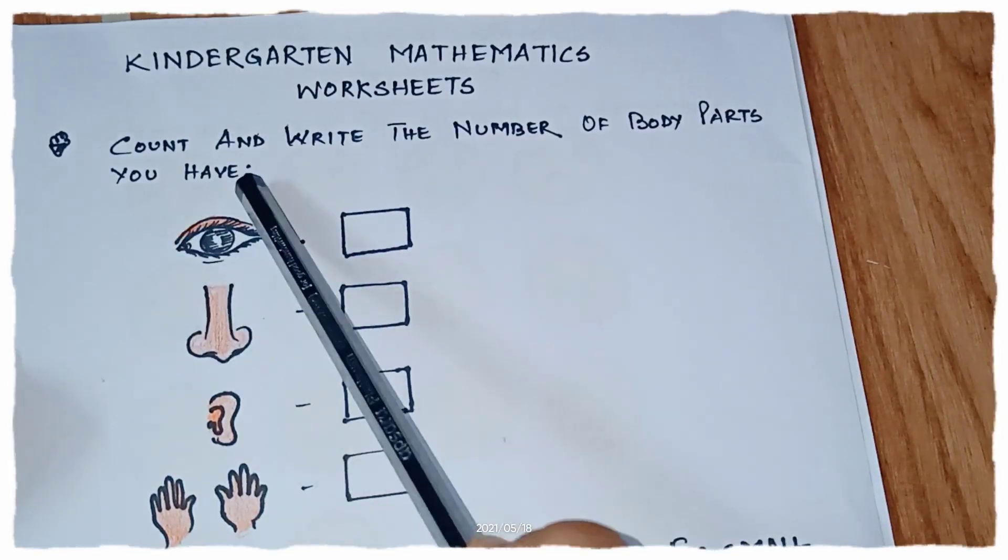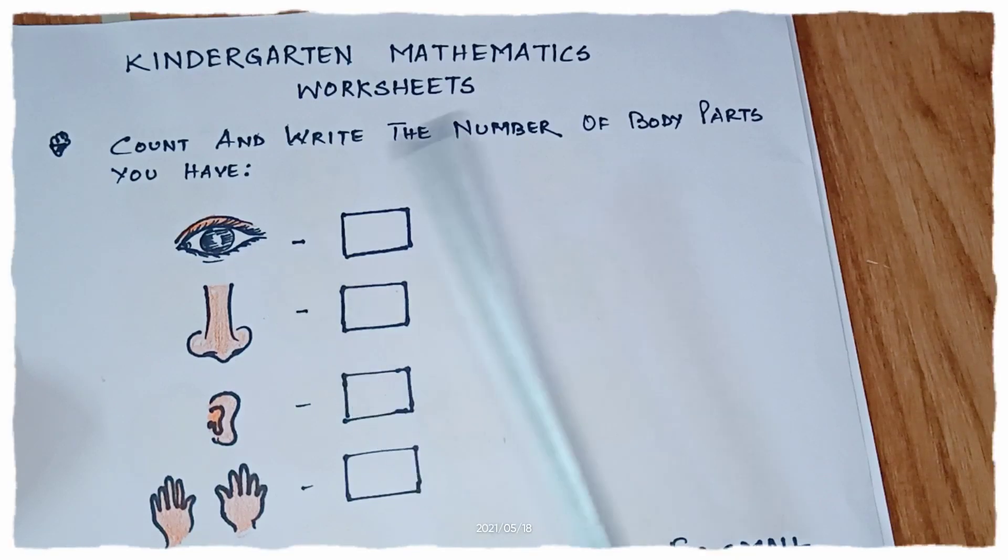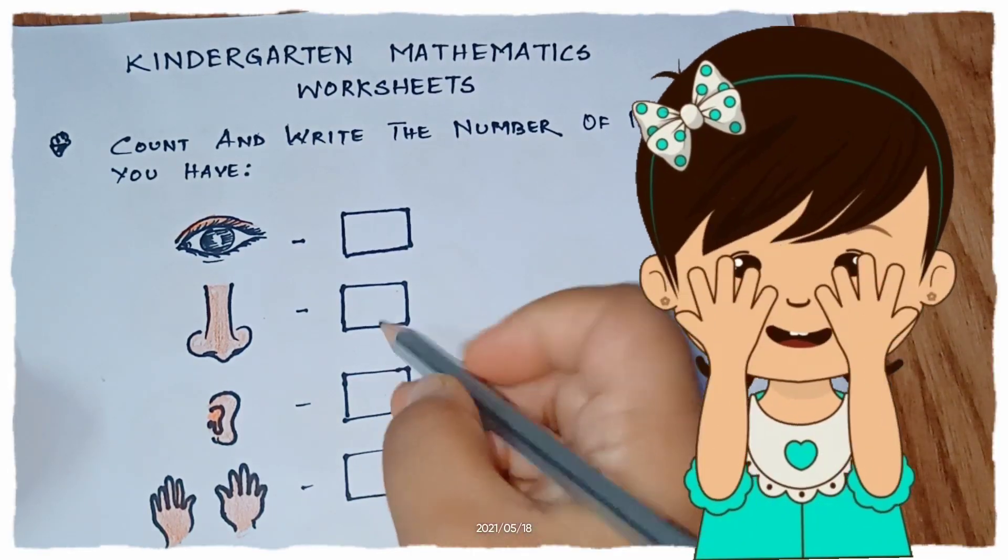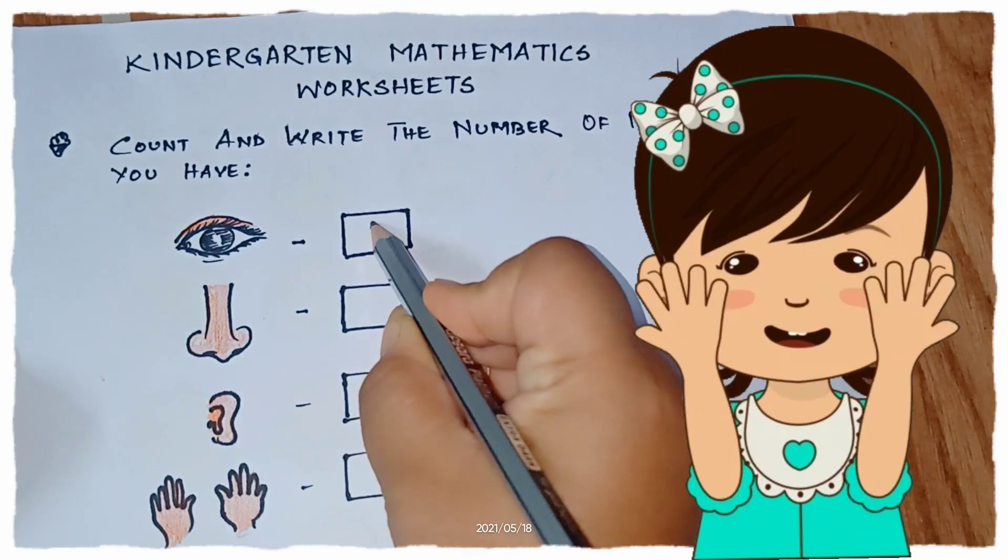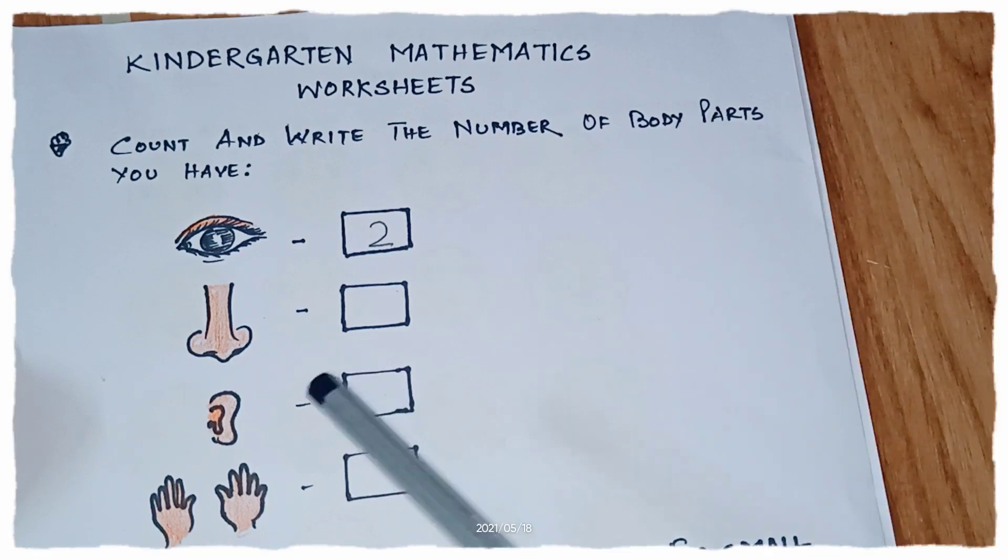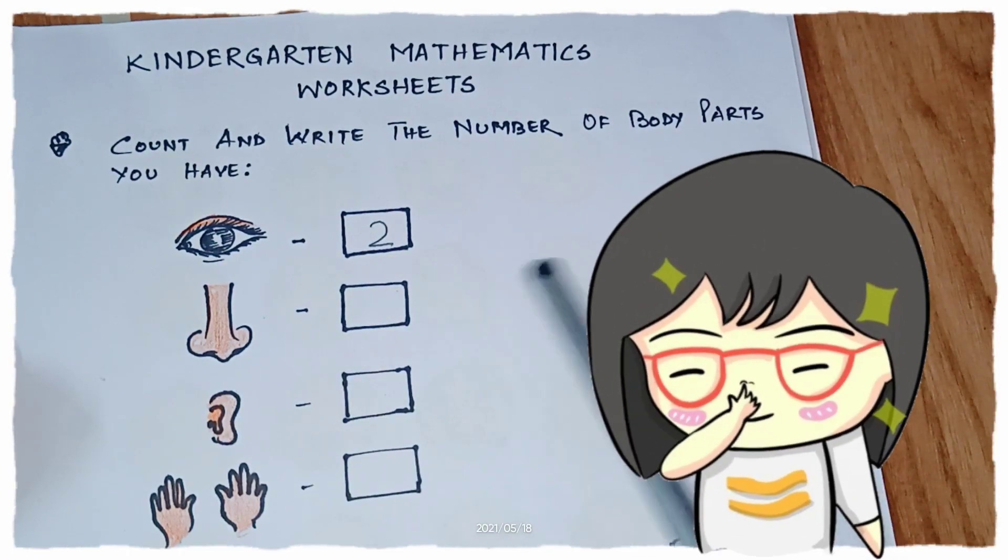Now let's see another worksheet. So we have to count and write the number of body parts that we have. These are our eyes. How many eyes do we have? We have 2 eyes, so we will write here 2.